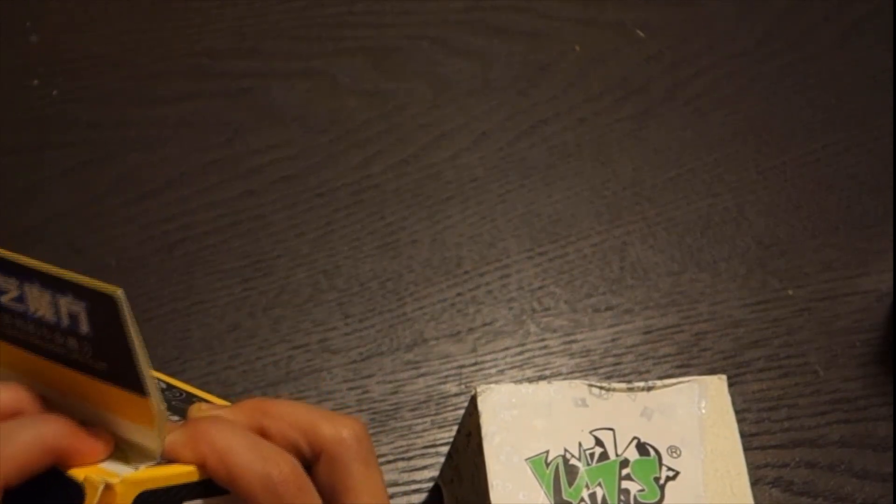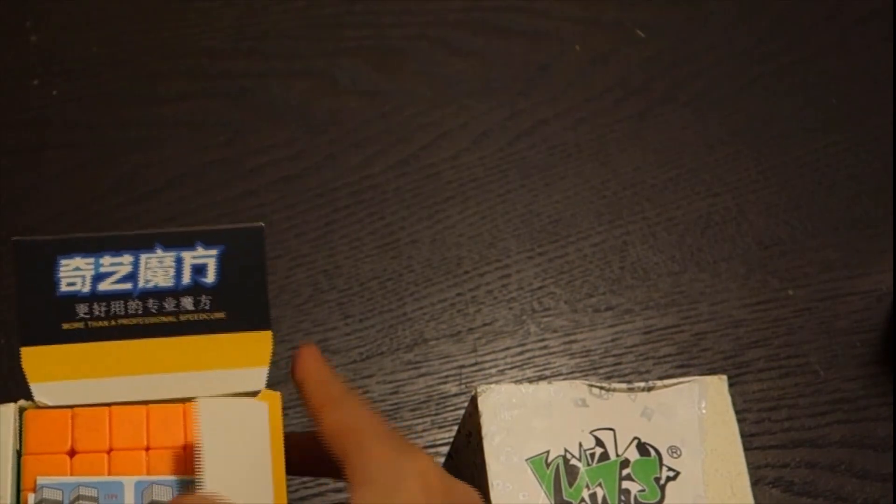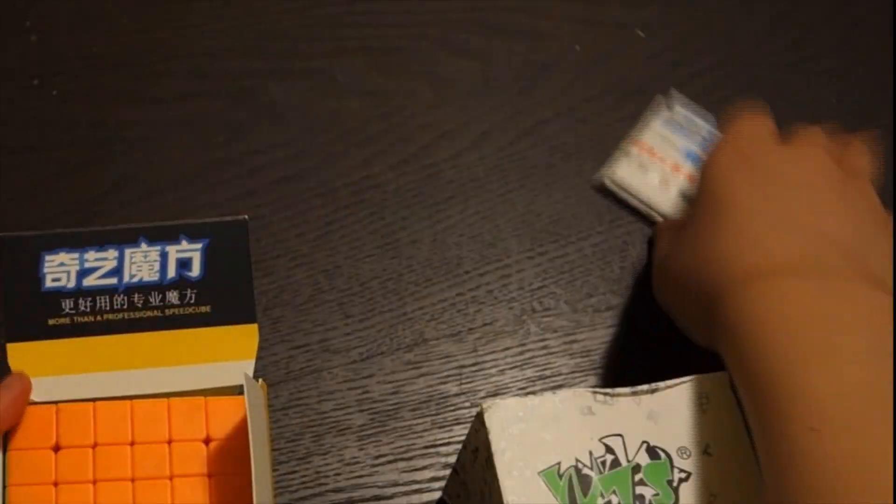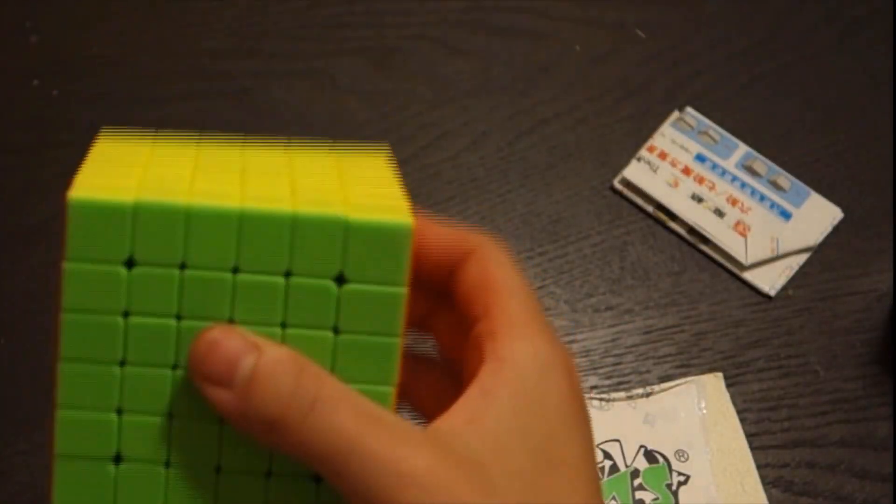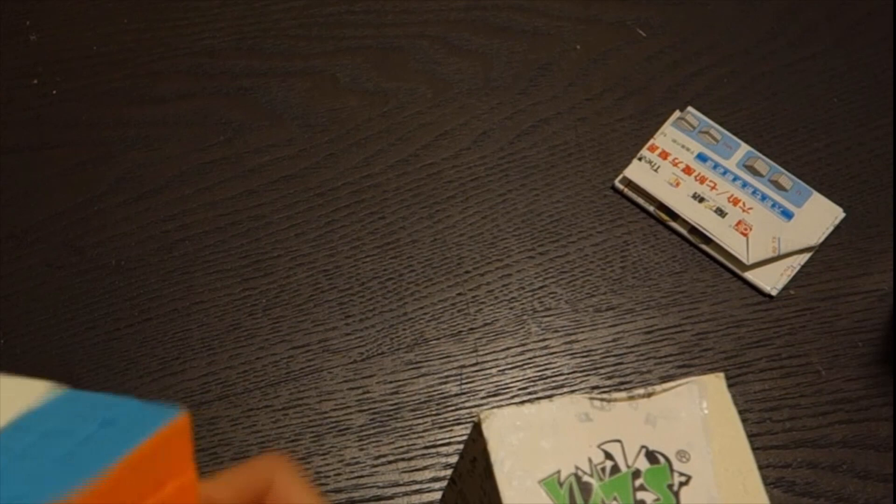This is a Chi 6x6, so let's go ahead and open this up. Looks like we just have a little pamphlet in here and we have the 6x6. So I actually don't own a 6x6, so obviously this is my first one.